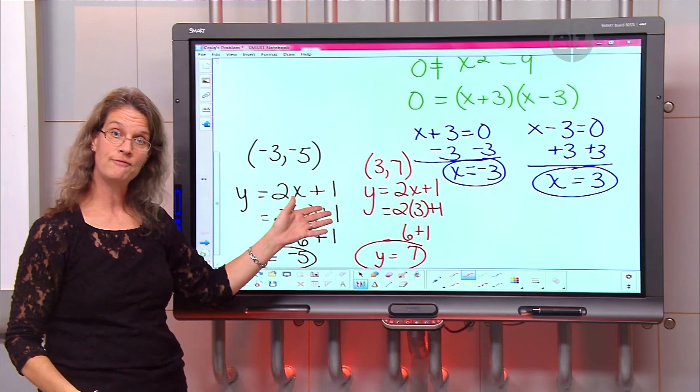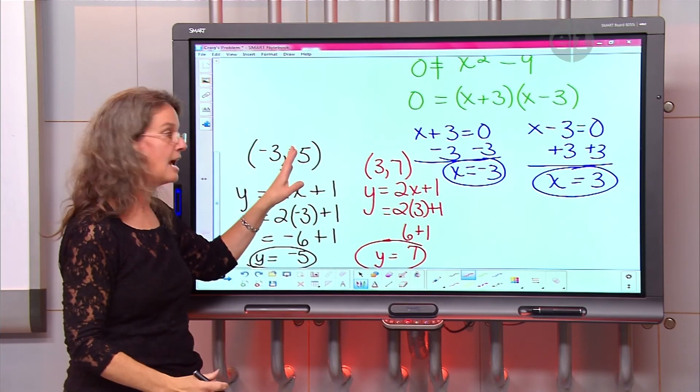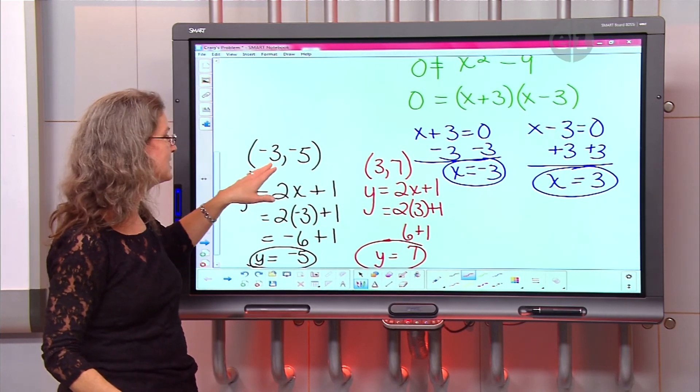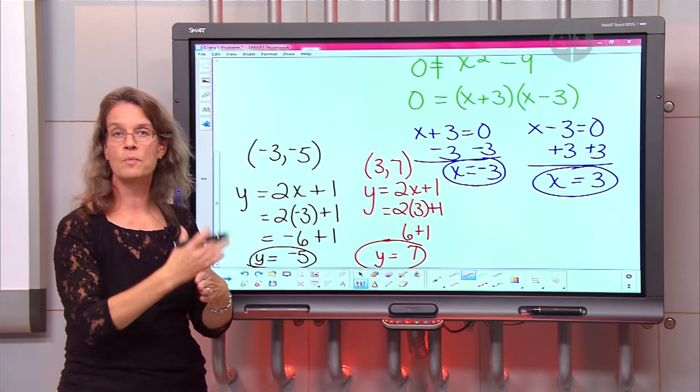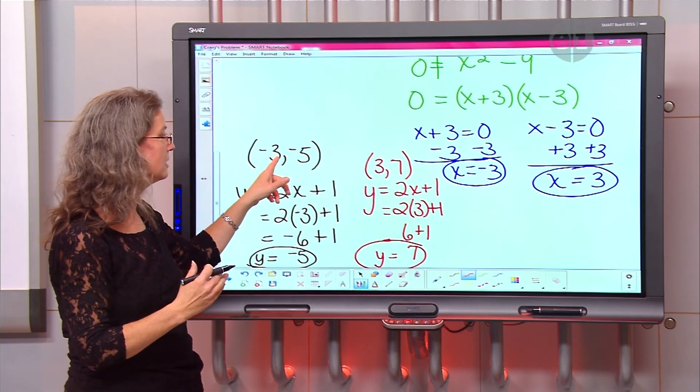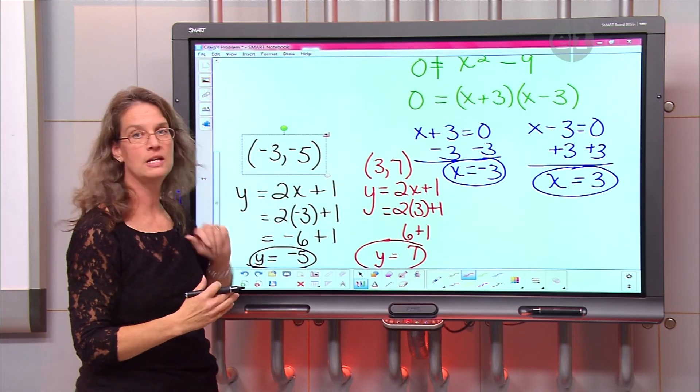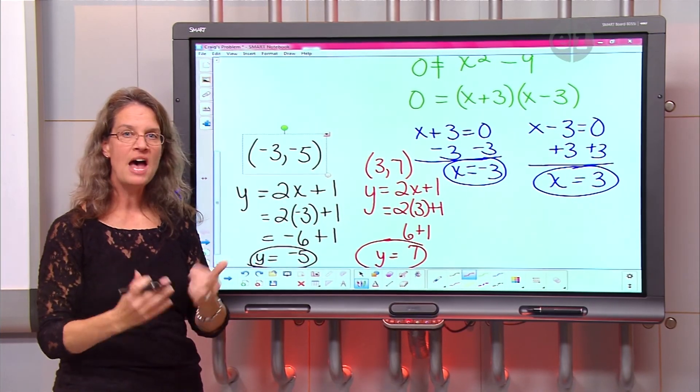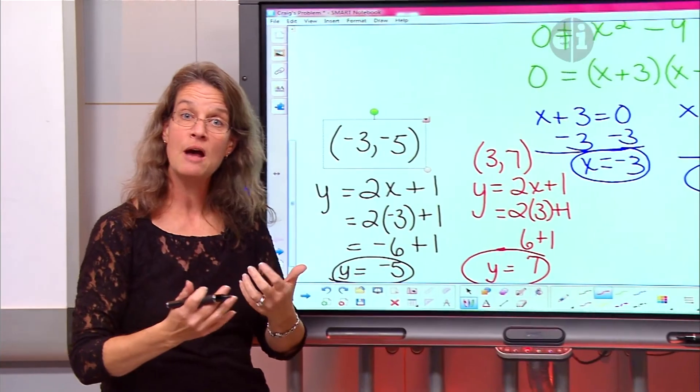So if you were to graph this to double check it on your calculator, the graphing calculator, these would be the two points where both of those different things, the quadratic and the line, would cross. At negative 3, negative 5. And at 3, 7. I hope that helps. And please give us a call so we can help you with your homework.